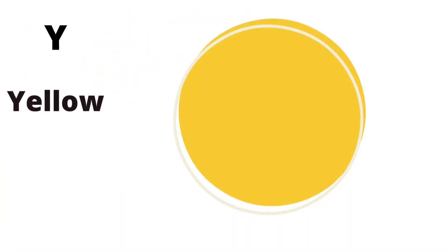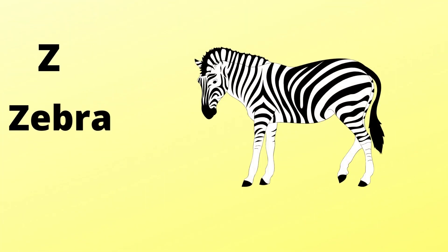Y is for yellow, y-y-yellow. Z is for zebra, z-z-zebra.